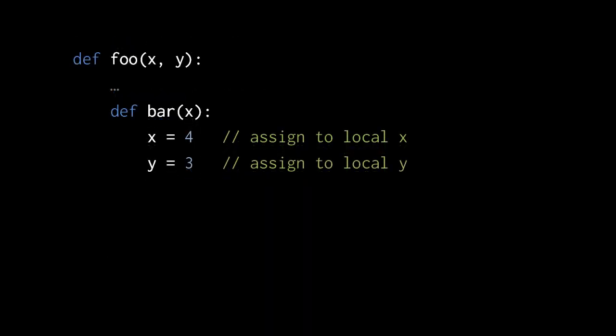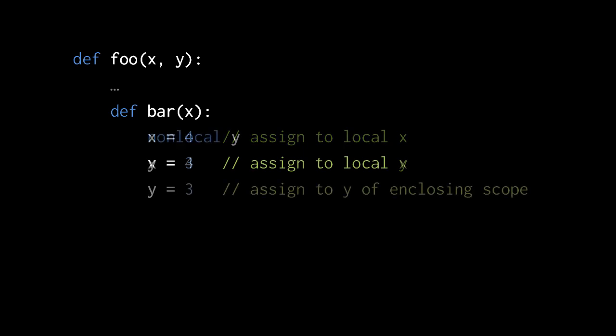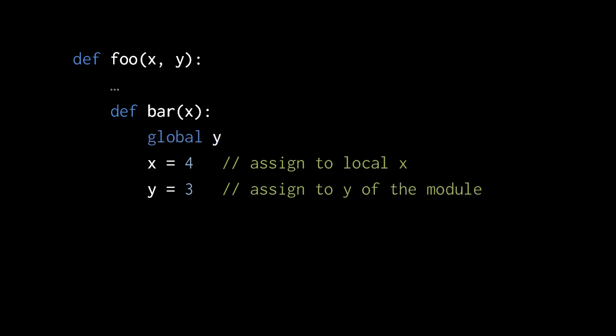In Python, in contrast, when we don't explicitly declare that y is non-local, it's assumed to be local just by virtue of the fact that we are assigning to it. If you want y in the function bar to actually refer to y of function foo, you have to declare it as such with a nonlocal statement. The nonlocal statement tells Python that this variable belongs not to this immediate function but to some enclosing function. If instead of declaring y as nonlocal we declared it global, that would mean y in bar refers to y of the module, not y of the enclosing function.